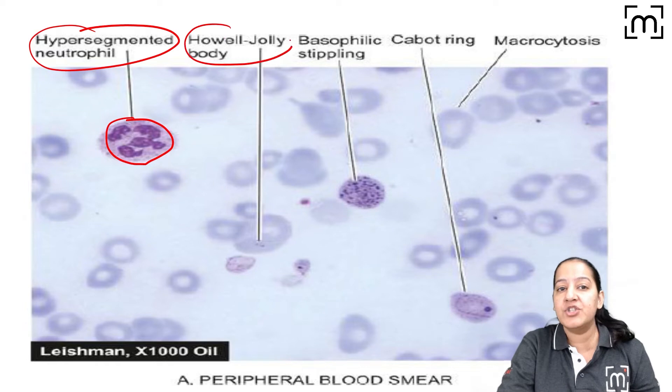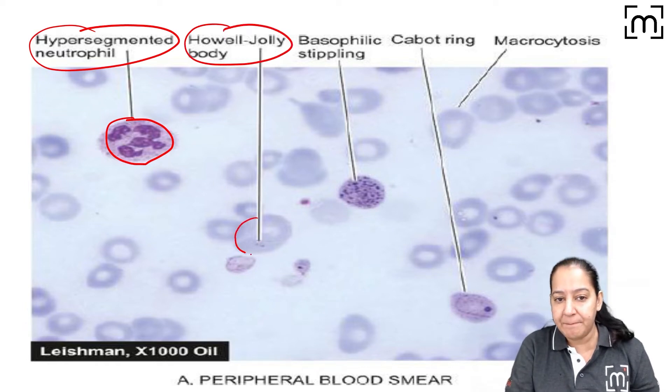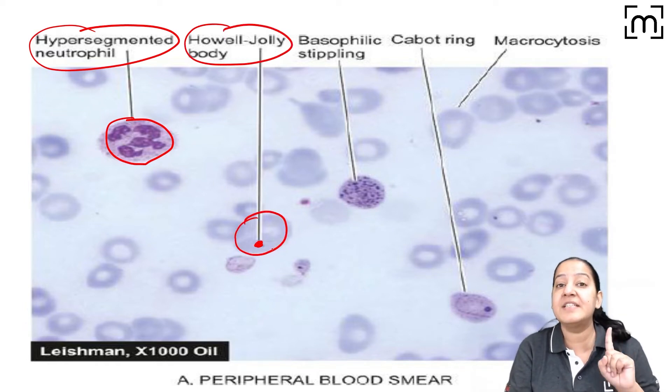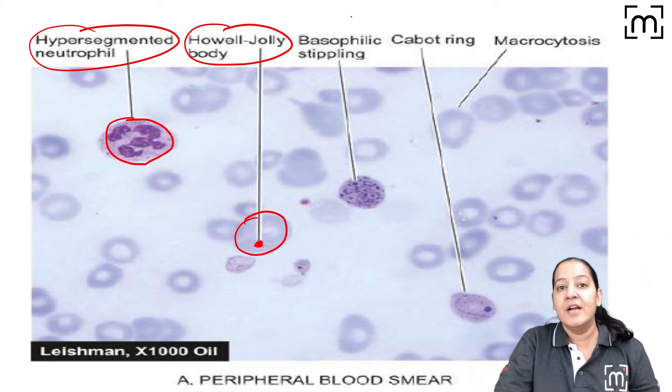The second is the Howell-Jolly Body. You can see it is a purple inclusion in the cytoplasm of the RBC and it is the DNA remnant.